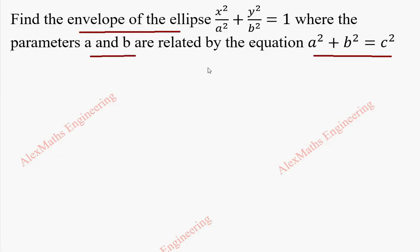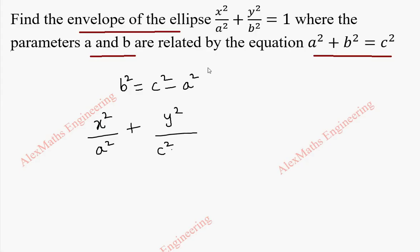As per the procedure, we have to differentiate with respect to the given parameter and eliminate the parameter to find the envelope. There are two parameters which are related by the equation a² + b² = c². From this we can take b² as c² - a², and that can be replaced in the ellipse: x² / a² + y² / (c² - a²) = 1. Now we are going to differentiate this equation with respect to the parameter a.